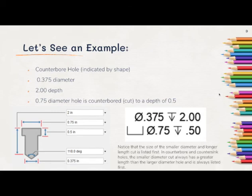Notice that the size of the smaller diameter and longer length cut is listed first. In counterbore and countersink holes, the smaller diameter cut always has a greater length than the larger diameter hole, and is always listed first.